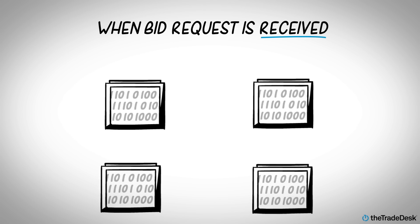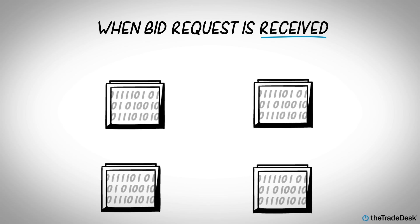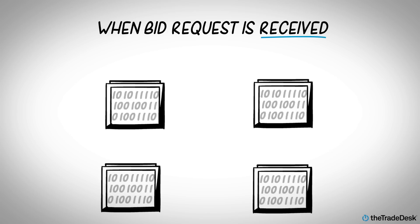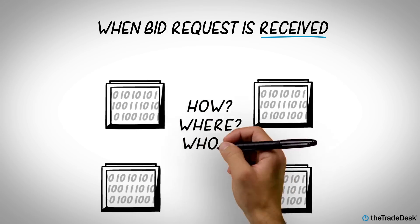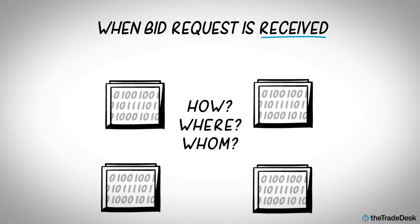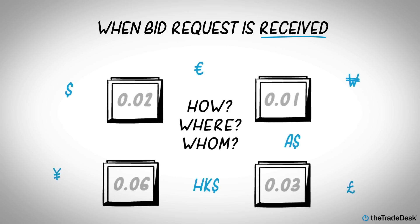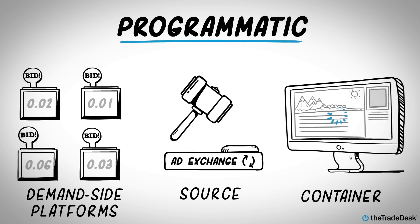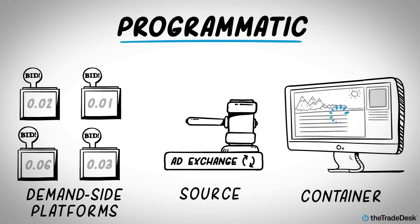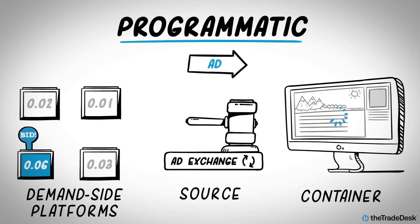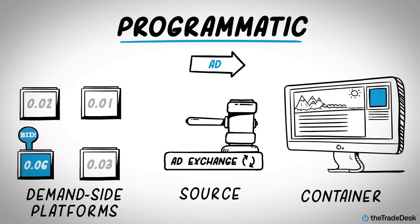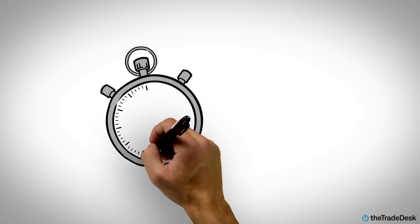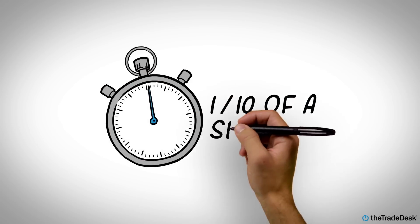When a bid request is received, each DSP sifts through hundreds of pieces of metadata about how, where, and to whom the ad will be shown, and decides what the opportunity is worth to its advertisers. An advertiser's level of interest is translated into a bid, and is submitted to the exchange where all bids are auctioned. The highest bidder wins, and their ad is sent to fill the original container. All of this happens in about a tenth of a second.